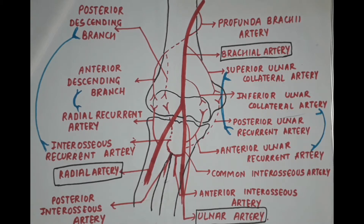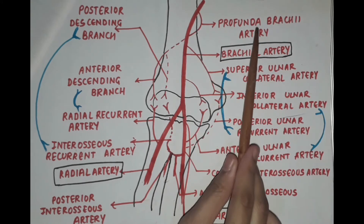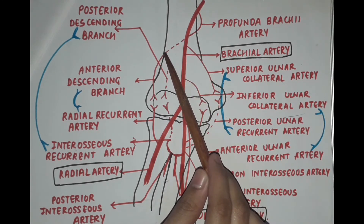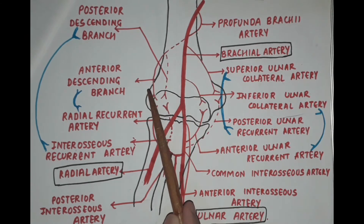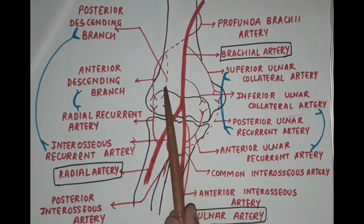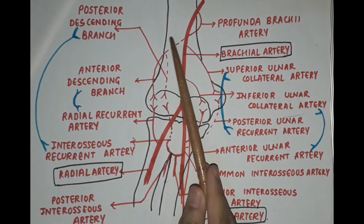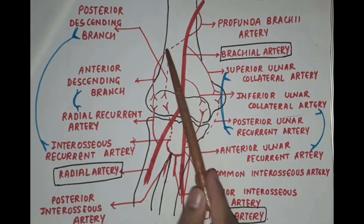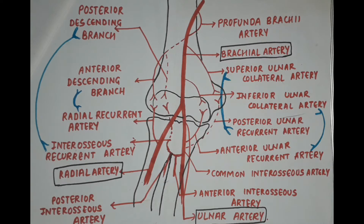The branches of these three arteries anastomose around the elbow joint and supply the ligaments and bones of the joint. The branches of the brachial artery include the profunda brachii artery, which further subdivides into two main branches: the anterior descending branch and the posterior descending branch. The dotted area indicates the artery is present at the back side.